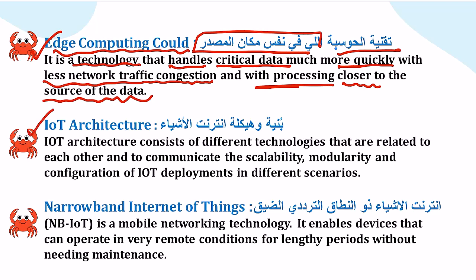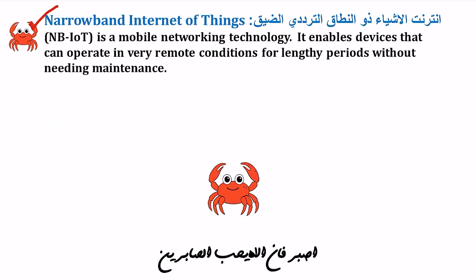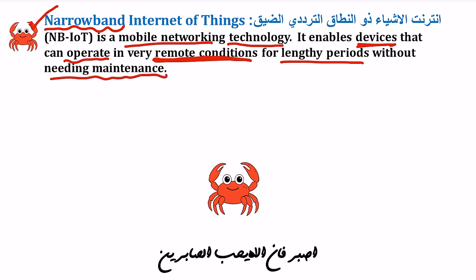التعريف التالي هو بنية إنترنت الأشياء IoT Architecture. بنية إنترنت الأشياء تتكون من تقنيات مختلفة مترابطة ببعضها البعض، تدعم قابلية التوسع والمرونة والتهيئة لتقنية المعلومات والنشر في سيناريوهات مختلفة. تعريف Narrowband IoT هو تقنية شبكات محمولة تسمح للأجهزة بالعمل في أماكن بعيدة لفترات طويلة بدون صيانة.